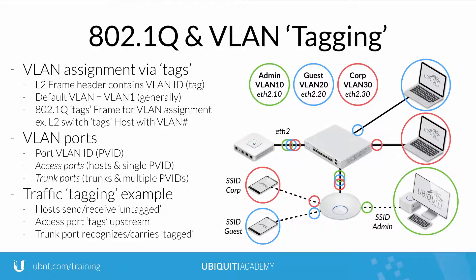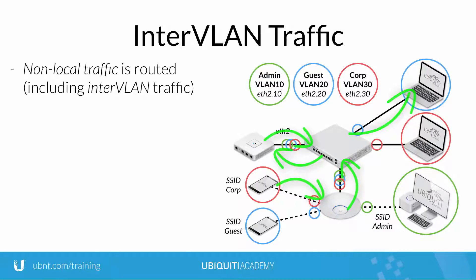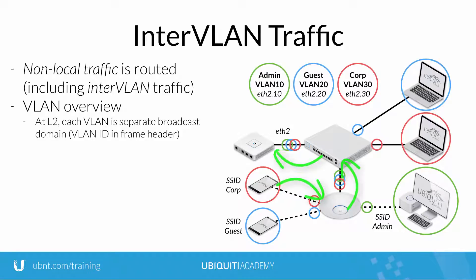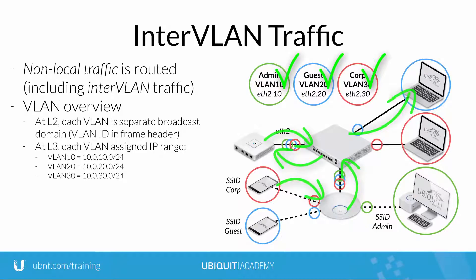Trunk ports can also carry untagged traffic if desired, but only one VLAN ID can and should be assigned to the untagged traffic. And, like all traffic destined to non-local networks, inter-VLAN traffic must be routed through a local gateway. To clarify, inter-VLAN traffic must be routed for two reasons: at Layer 2, each VLAN represents a separate broadcast domain, while at Layer 3, each VLAN receives a unique network IP range.